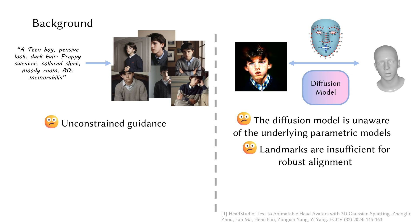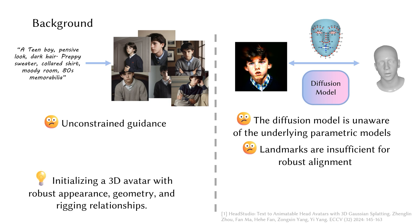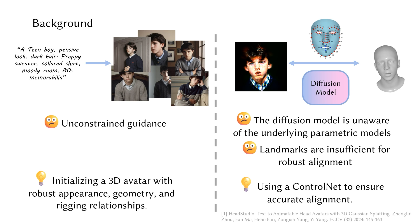In this paper, we address appearance and geometry ambiguities by initializing a 3D avatar with robust appearance and geometry, rigged to the morphable model. Additionally, we resolve ambiguities between the diffusion model and the underlying mesh by leveraging a ControlNet conditioned on dense normal and semantic maps to ensure accurate alignment.